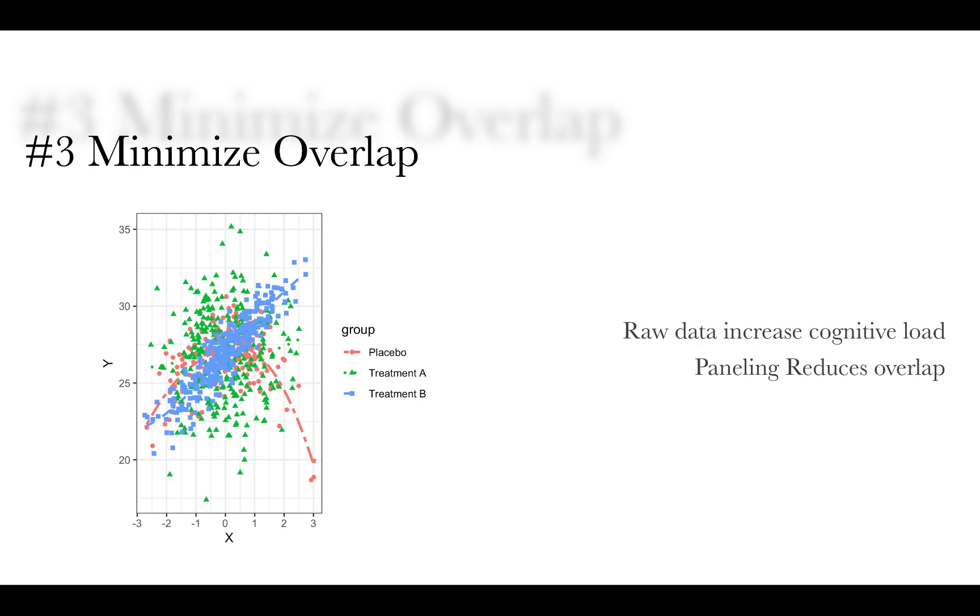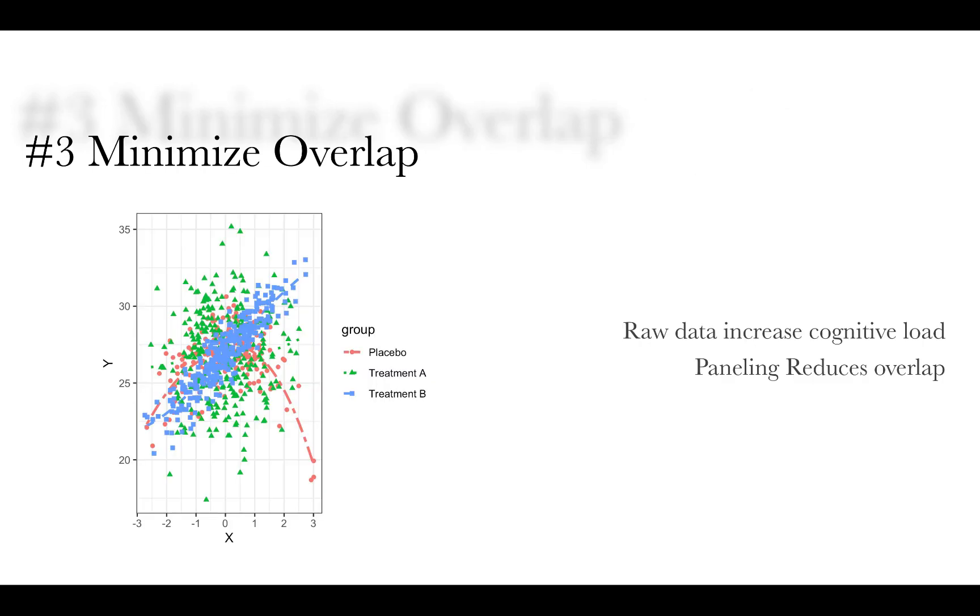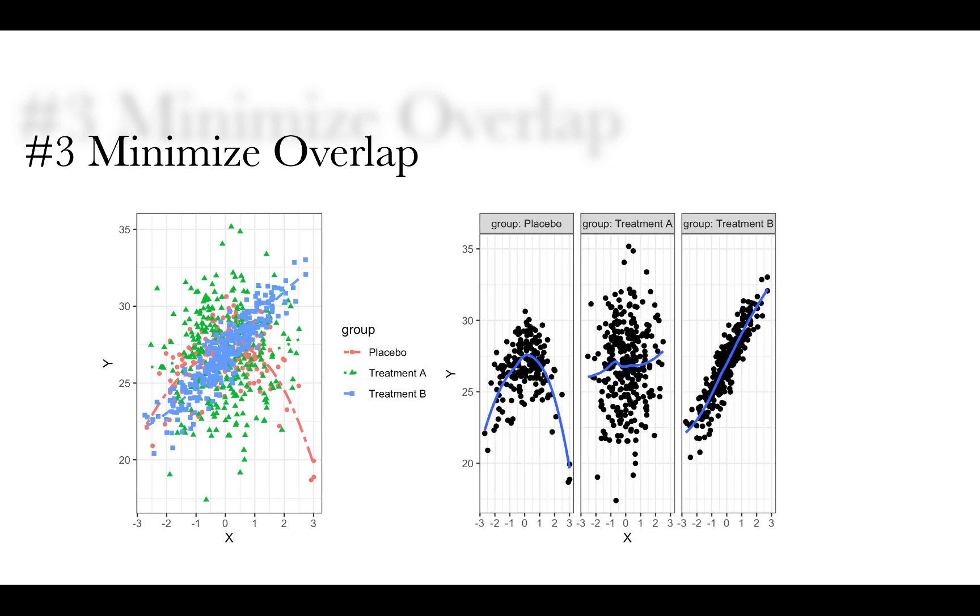Number three, we minimize overlap. So anytime you add raw data, one of the concerns is now there's a lot more to look at, so it can increase cognitive load. And so here's an example where there is a whole lot of cognitive load going on. There's so much overlap. It's really hard to see what's going on. And so if we were to panel it, separate them into different groups, it eliminates the overlap between groups and it makes it much easier to see the patterns emerge.